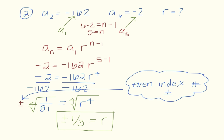Based on the information given, I don't know if it's positive 1 third or negative 1 third. It could be that I'm multiplying by a positive value each time, which would make all of these terms negative. Or it could be that I'm multiplying by a negative ratio, which would make all the terms alternate negative, positive, negative, positive. That's why I need to give both of those values as my answer.